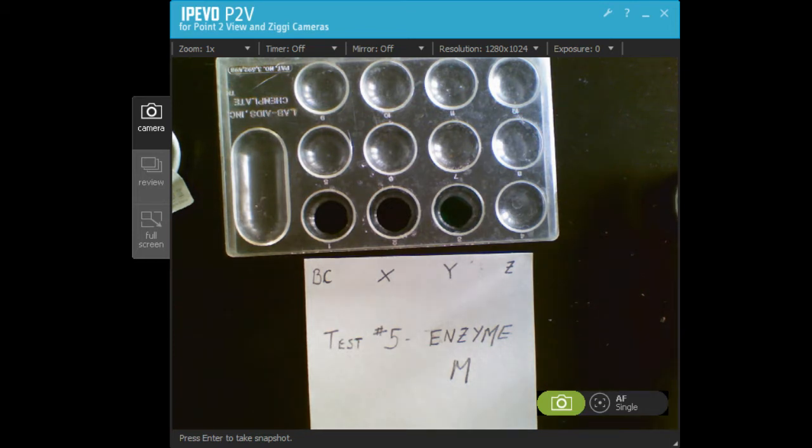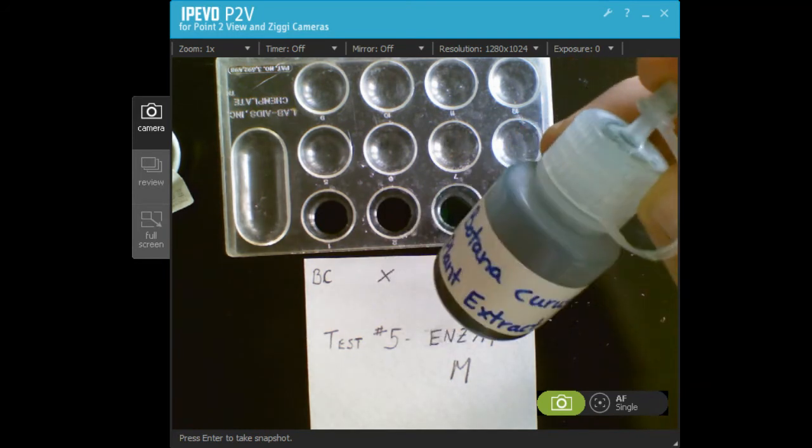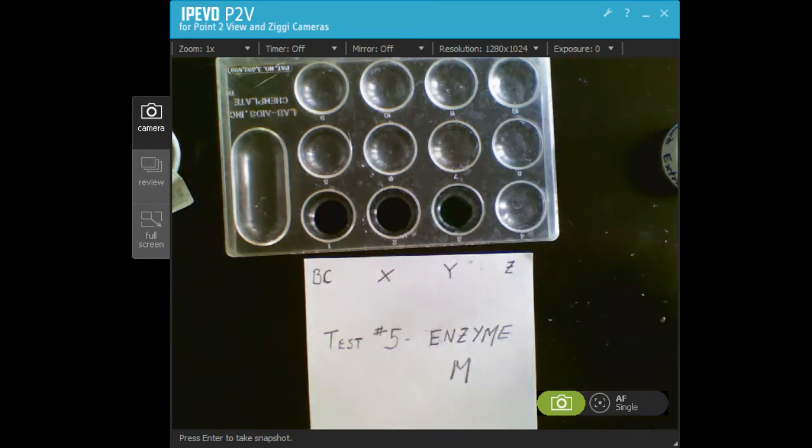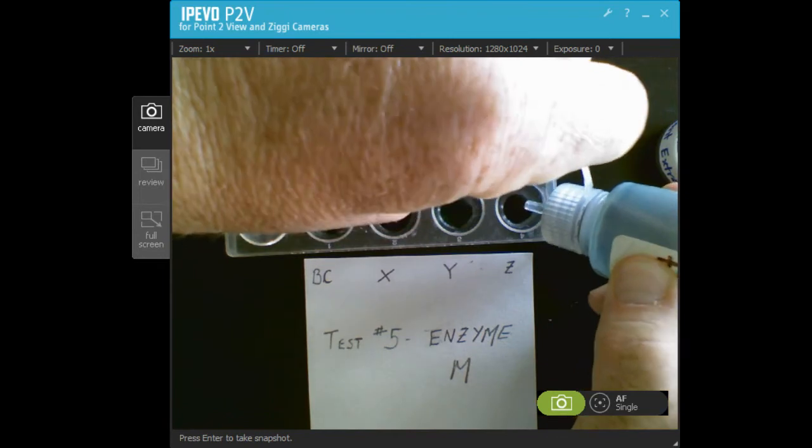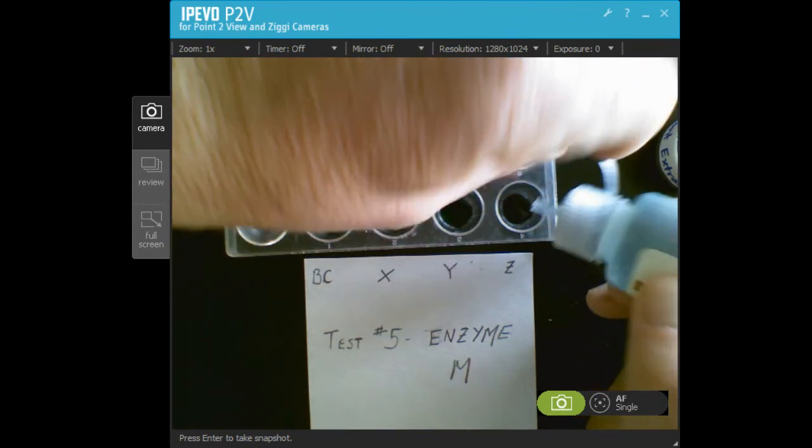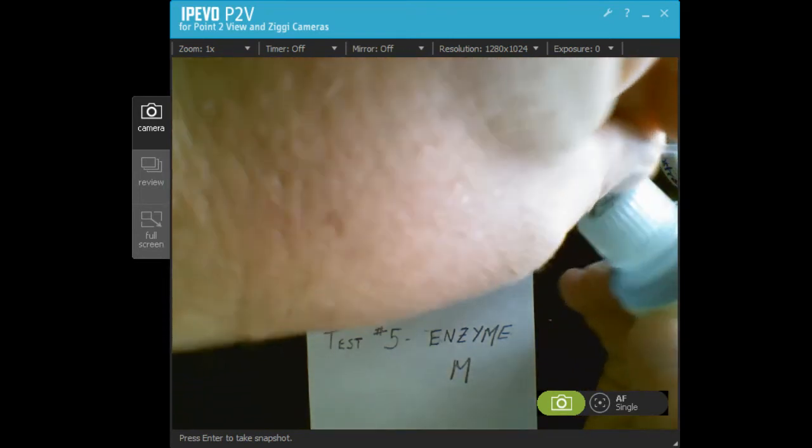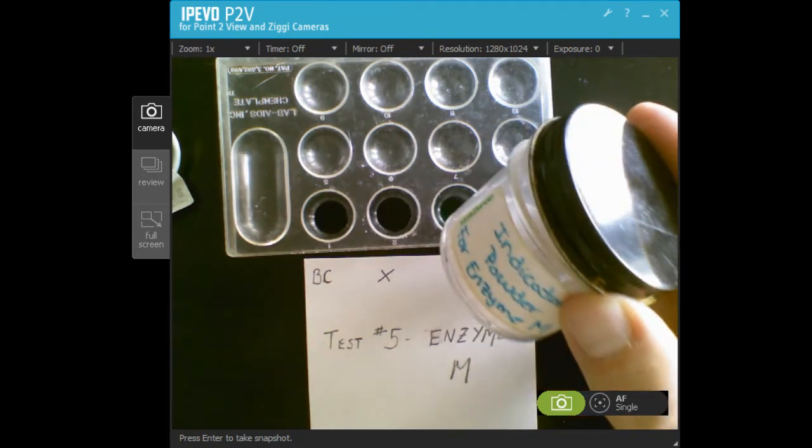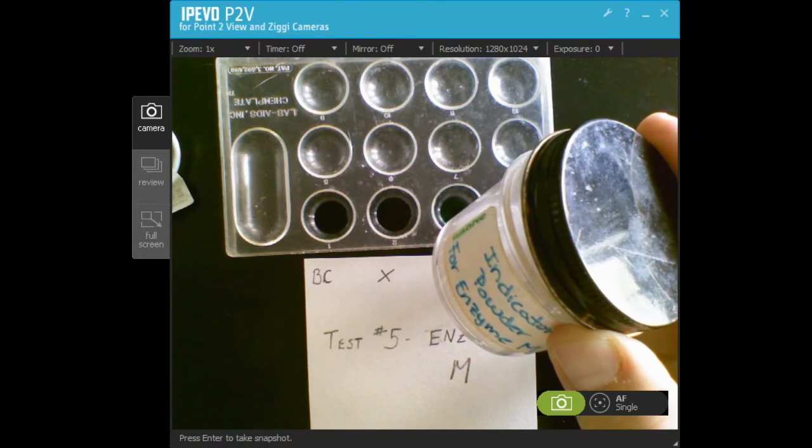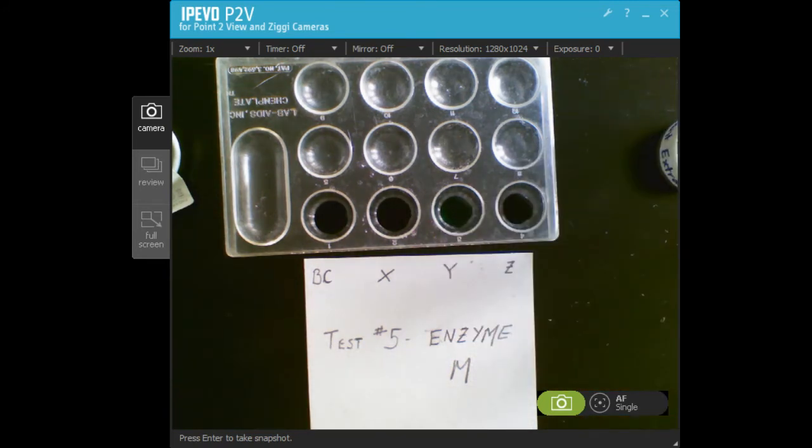You can see in the well plate here I have plant extract from Botanicuris, species X, Y, and I'm about to place plant extract from species Z. I am going to test for the presence of enzyme M with this indicator powder you see I have here.